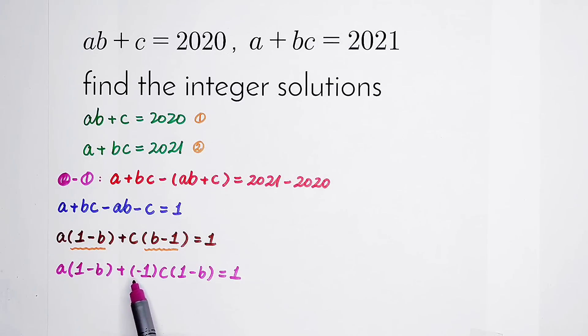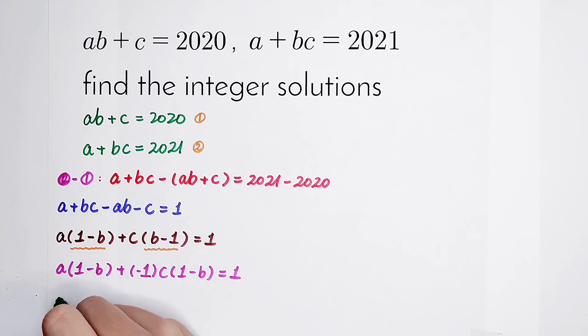So then I multiply by minus 1 here, and minus 1, and this minus 1, they cancel and be 1. Now, A times 1 minus B, and then minus C times 1 minus B.